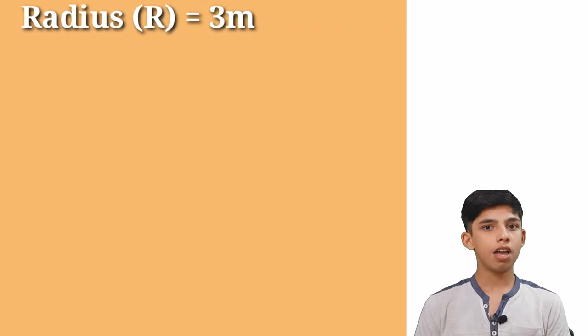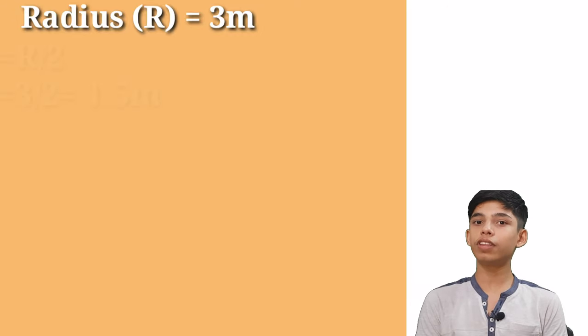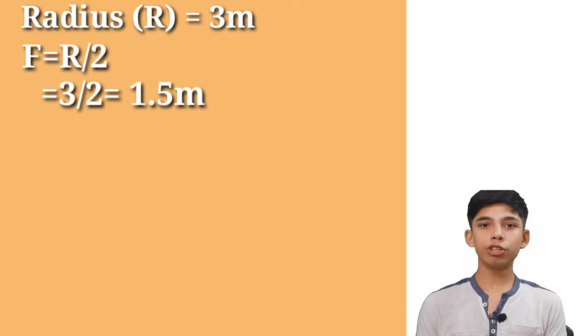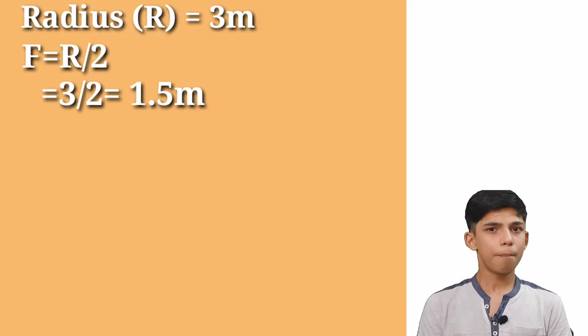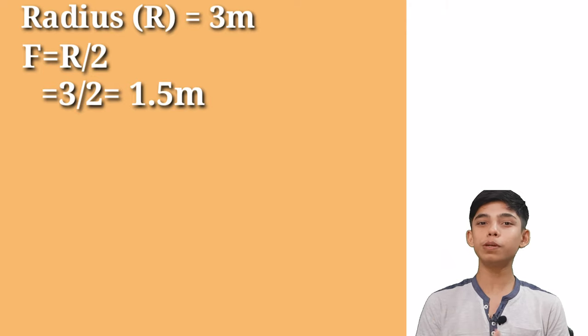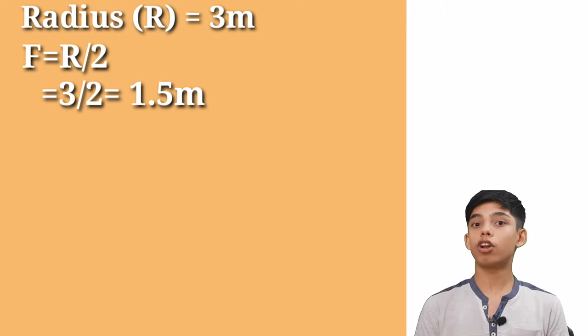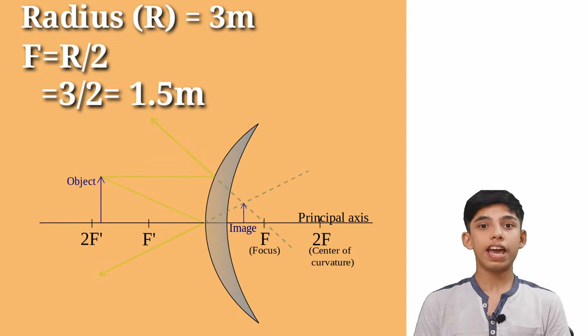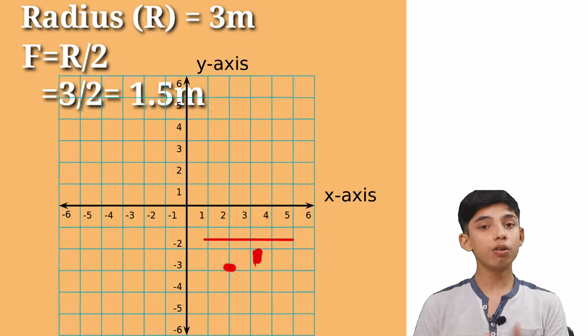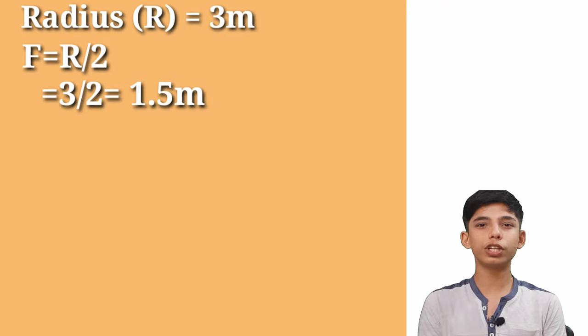Okay, so we have radius as 3 meters, but we don't need this. We need focus and focus is half of the radius. So it is going to be 3 by 2 or 1.5 meters, but is this going to be positive or negative? So we have already observed that convex mirror has its focus on the right side. And from our sign convention, right is positive. So we can say that this value is going to be positive.